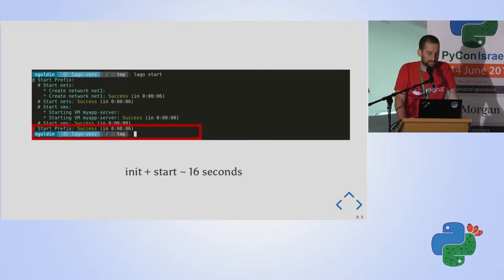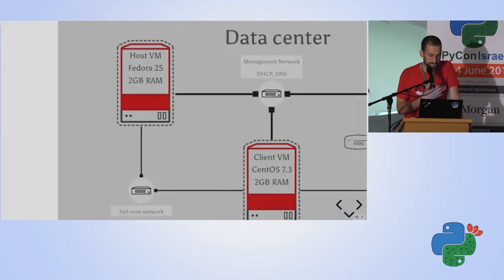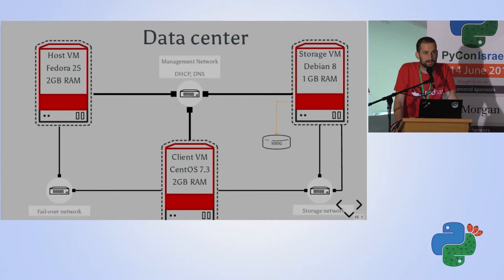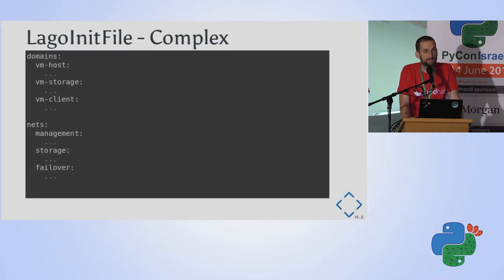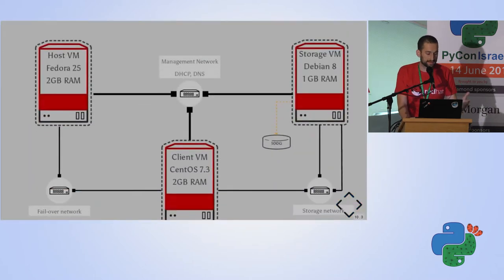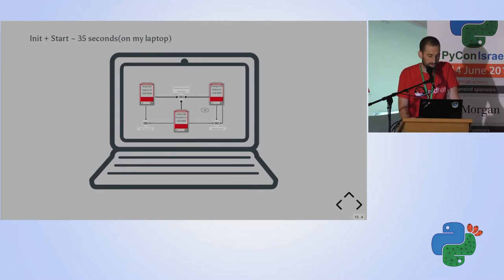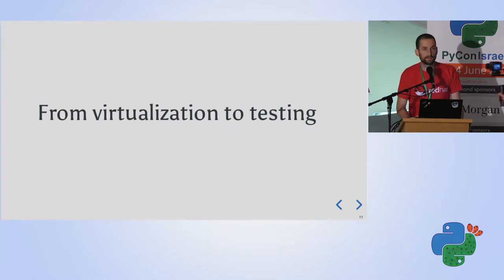The previous example was quite simple, but it can get much more complicated. Here we have a data center example with three VMs with different RAM specs and CPU types, three networks, DHCP, DNS, and even a storage server with 100 gigabytes of disk — all described in a single init file. When I run it on my laptop, it all comes up on my laptop in around 25 seconds. I think that's pretty nice.